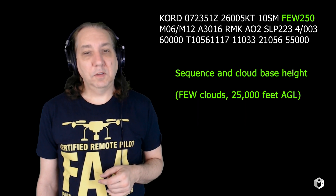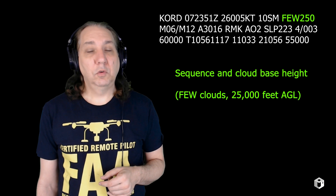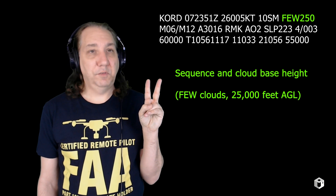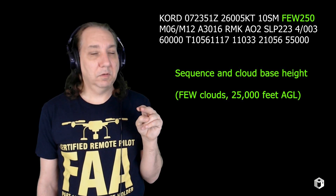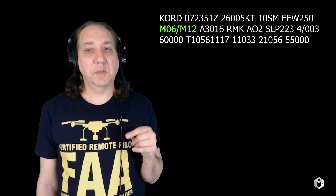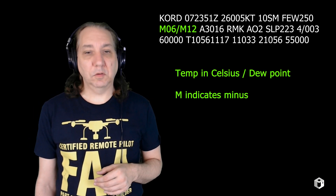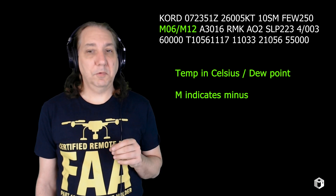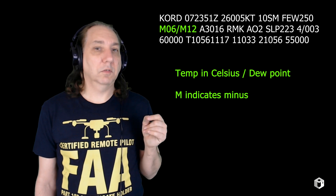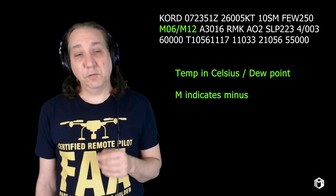Sky condition: sequence and base height. FEW 250 — we add two zeros to everything — so FEW 250 means few clouds at 25,000 feet. The next section — M06/M12. M means minus. This is the temperature in Celsius, then a slash and the dew point. Since M means minus, in this case it's minus 6 degrees Celsius temperature and minus 12 degrees Celsius dew point.